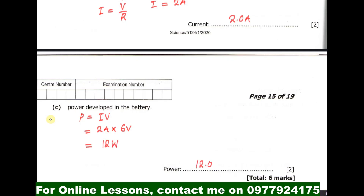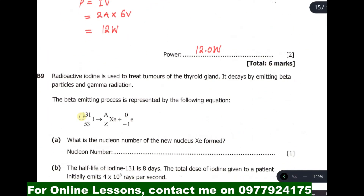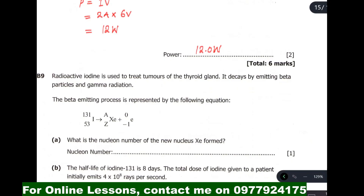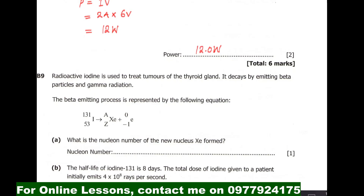We now go to question B9: a radioactive iodine is used to treat tumors of the thyroid gland. It decays by emitting beta particles and gamma radiation. The beta-emitting process is represented by the following equation, and part a asks: what is the nucleon number of the new nucleus formed?